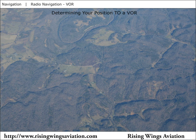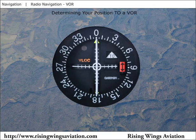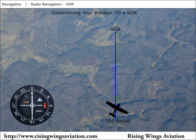To find the direction to a VOR, rotate the OBS until the needle is centered with a TO indication. The number shown on the top of the display is the bearing from your airplane to the VOR. This is exactly the opposite of the direction from the station to the airplane; therefore, your bearing or radial from the station is also shown on the bottom of the display.